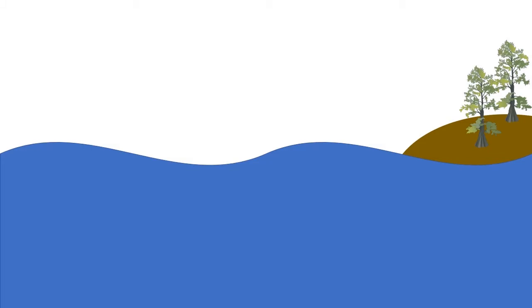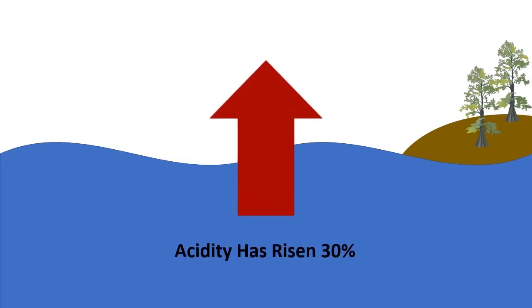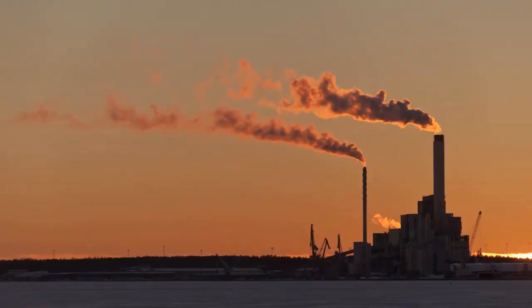Our oceans have increased in acidity about 30% since pre-industrial times. Why is that? Well, as we burn fossil fuels, we release carbon dioxide into the atmosphere. A lot of this carbon dioxide ends up being dissolved in the ocean, which raises its acidity.